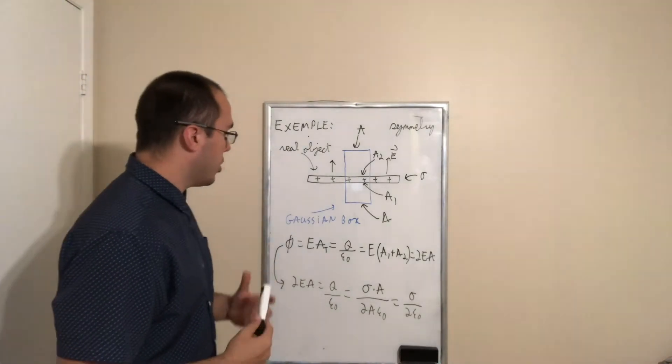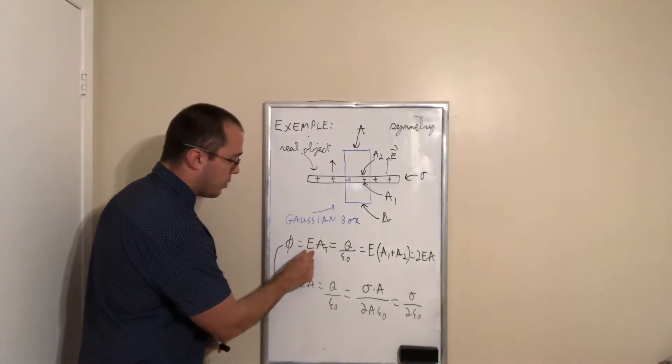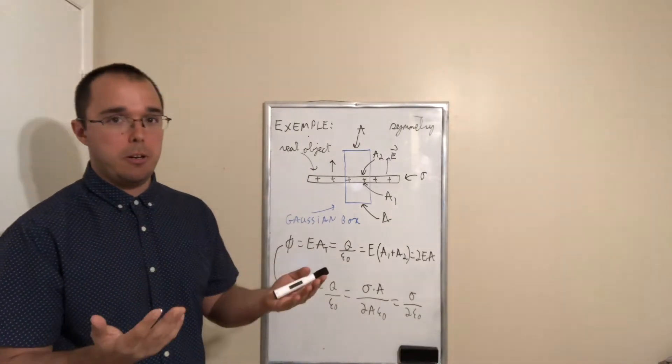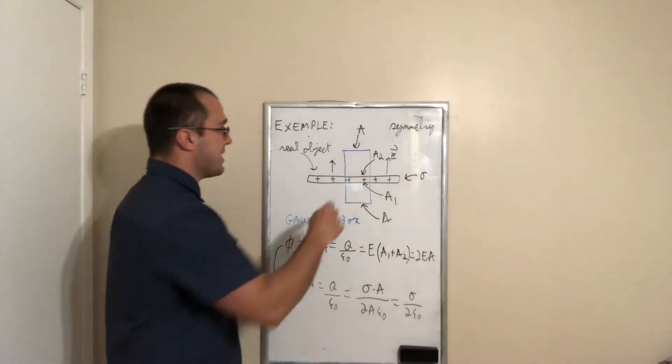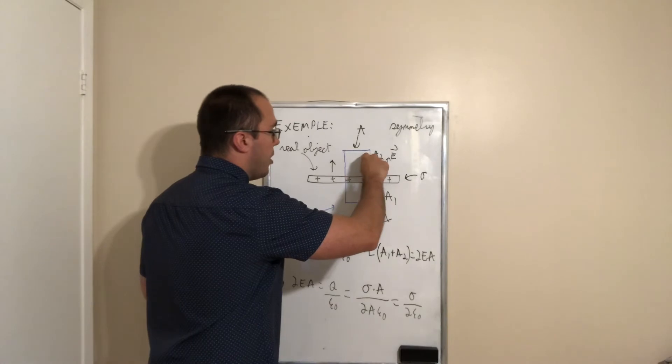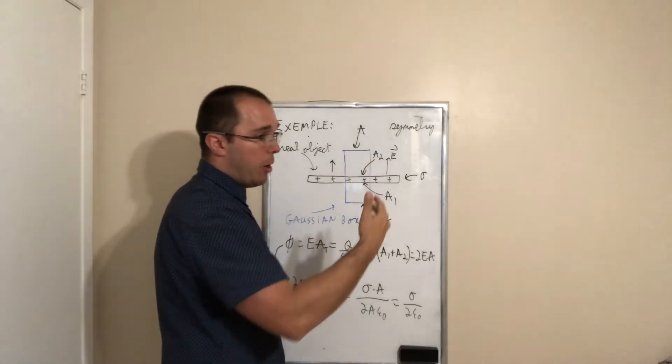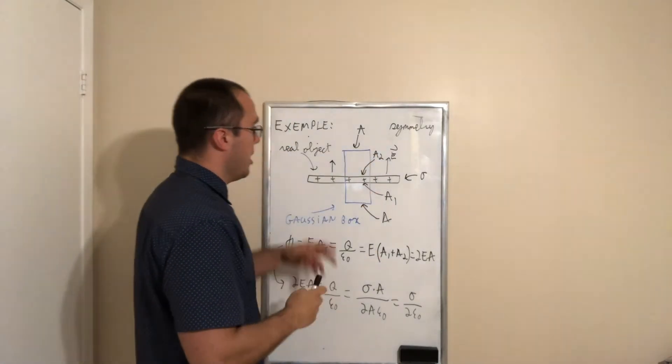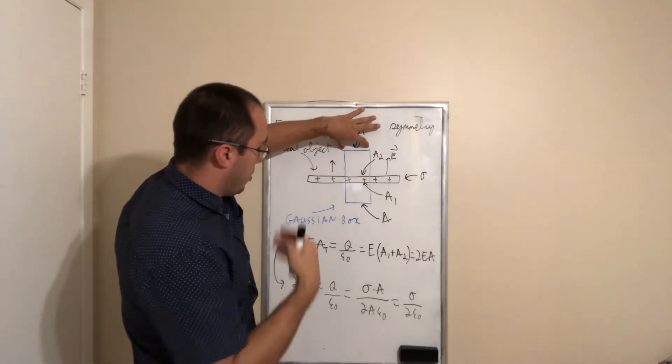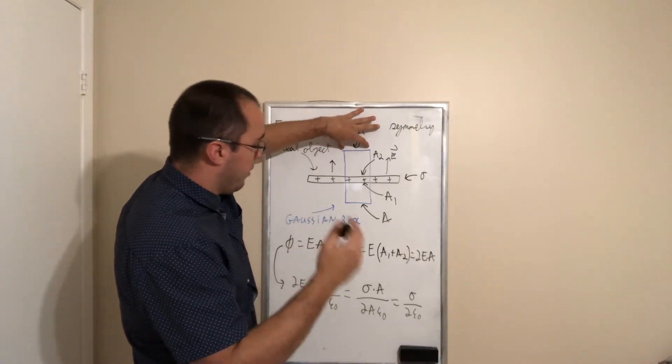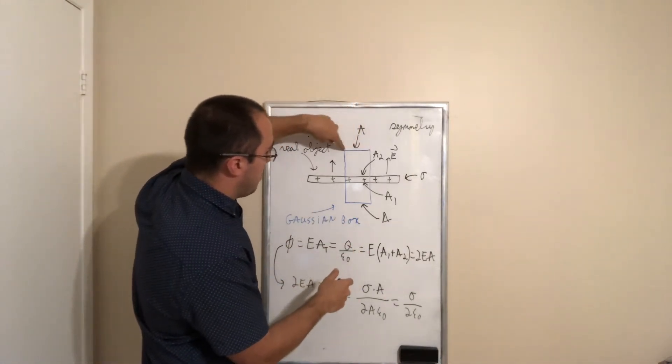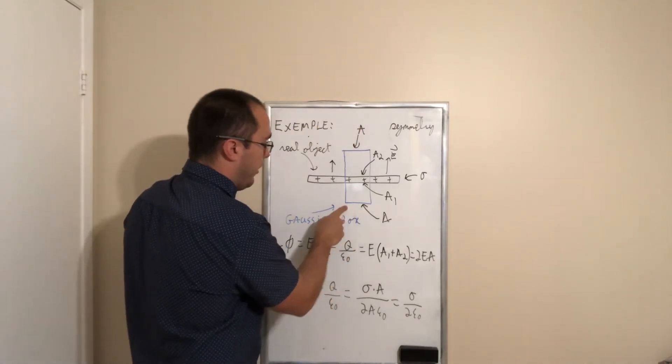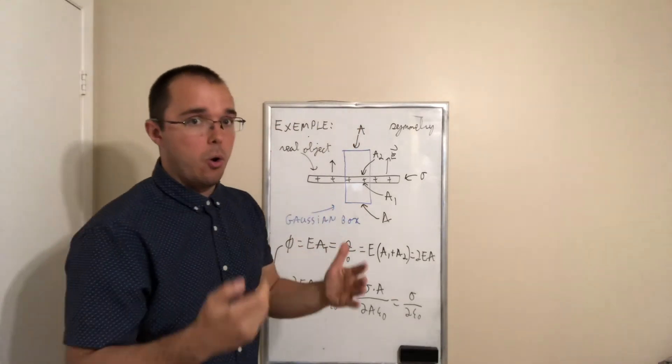So, remember, the electric flux is equal to the electric field multiplied by the area. Now, in this case, we're going to consider the area of our box, the top part, which is the only part where there is an electric flux. So, to get the total flux, we need to add electric field multiplied by this area plus electric field multiplied by this area over here.